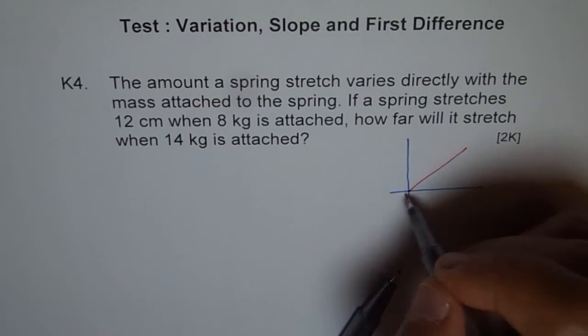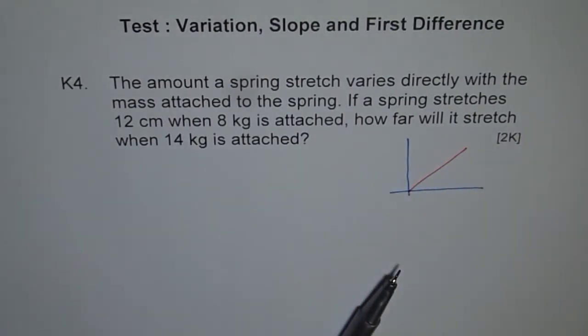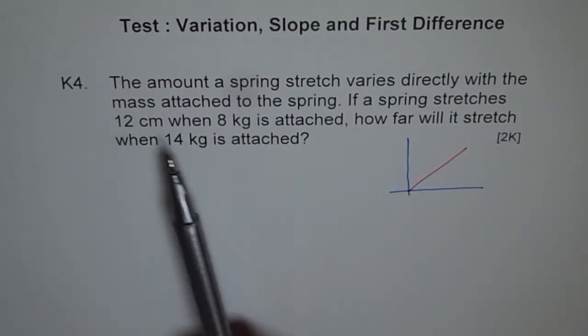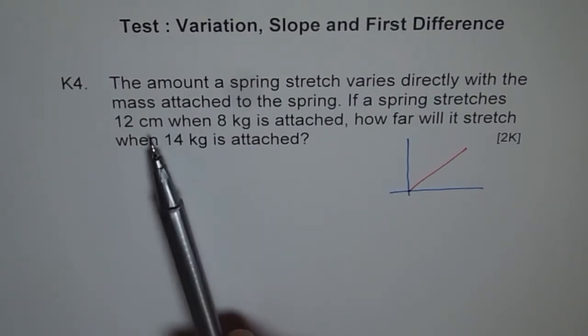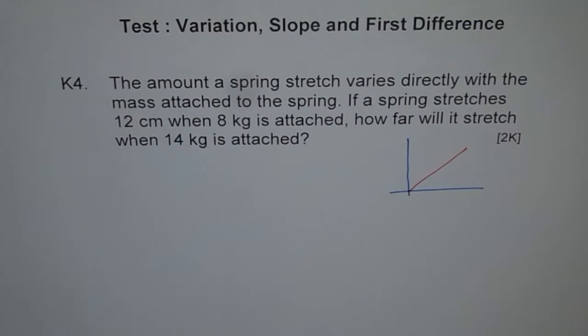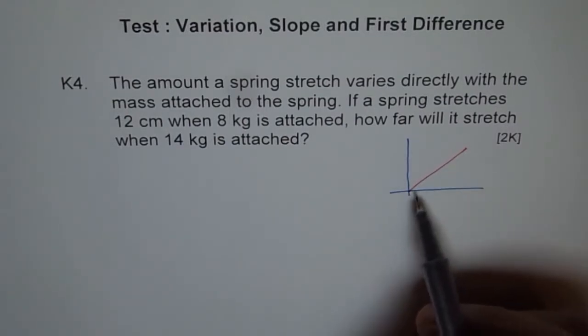That means if there is no mass attached to it, then it will not stretch at all. It is at initial position zero, right? So the special thing about direct variation is that there is a constant ratio.